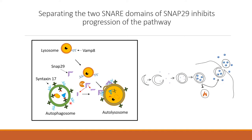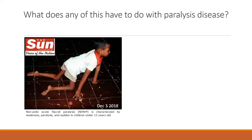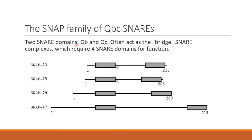SNAP29 cleavage is very important to this virus — it's essential for normal viral replication. But you might ask: what does any of this have to do with paralysis? Of course we're all interested in acute flaccid paralysis in non-polio disease that has been such a concern over the last decade. I was thinking about botulism, which is one of the classic flaccid paralyses, and how it's been very well characterized over the last several years.